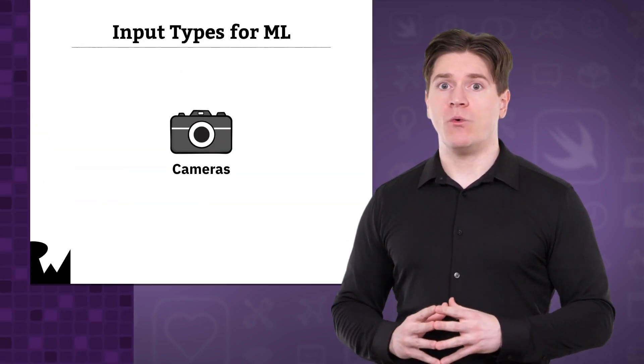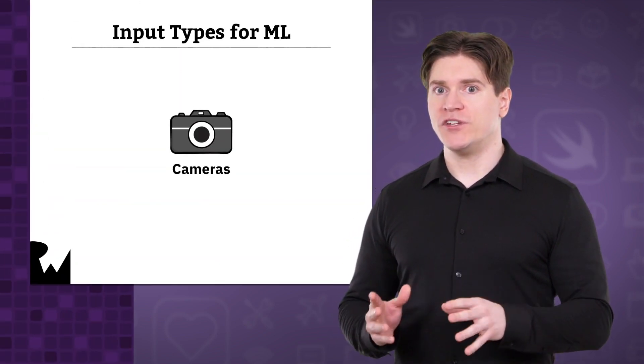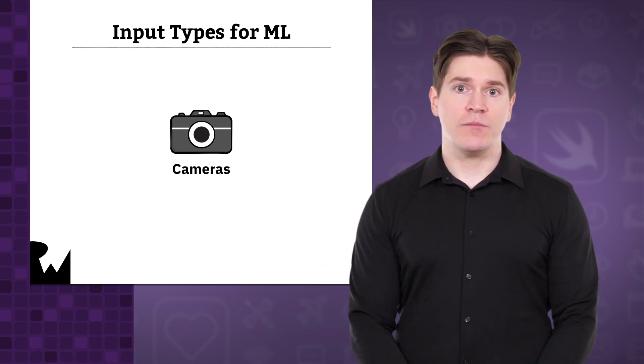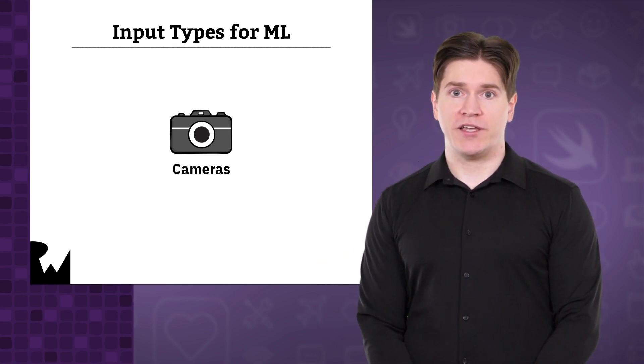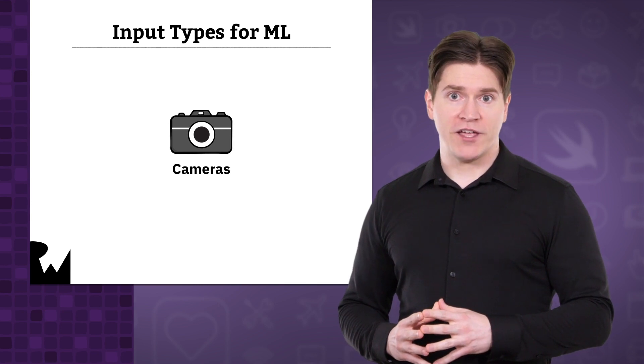You'll also learn a bit about how machine learning, ML for short, works behind the scenes. We'll be exploring ML in the context of image classification, which is one of its most widespread uses, but don't get the idea that's all ML can do. On mobile devices, there are four main data input types you can use for machine learning. The cameras are what we'll be making use of. Machine learning can analyze or augment photos and videos captured by cameras, or use the live camera feed.